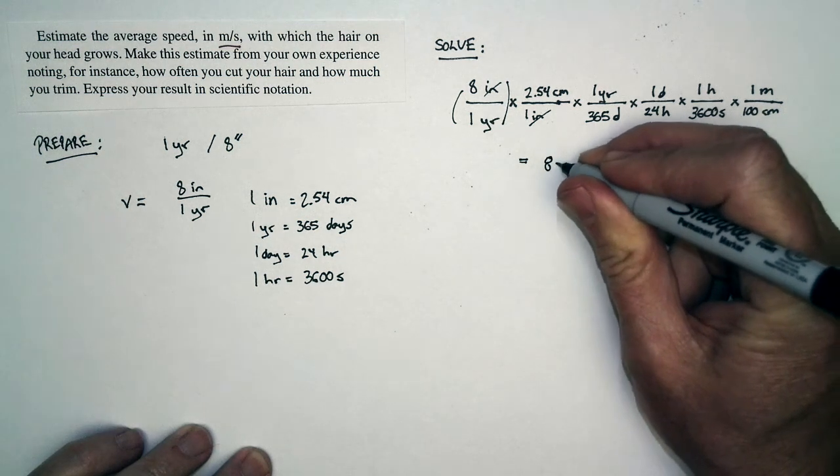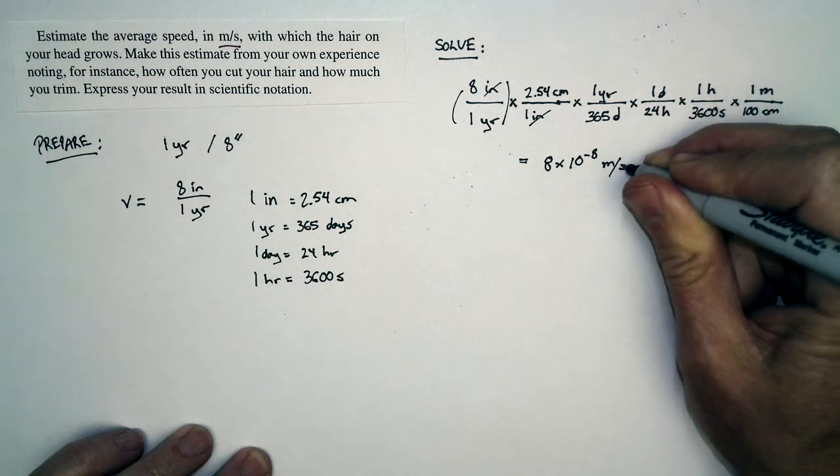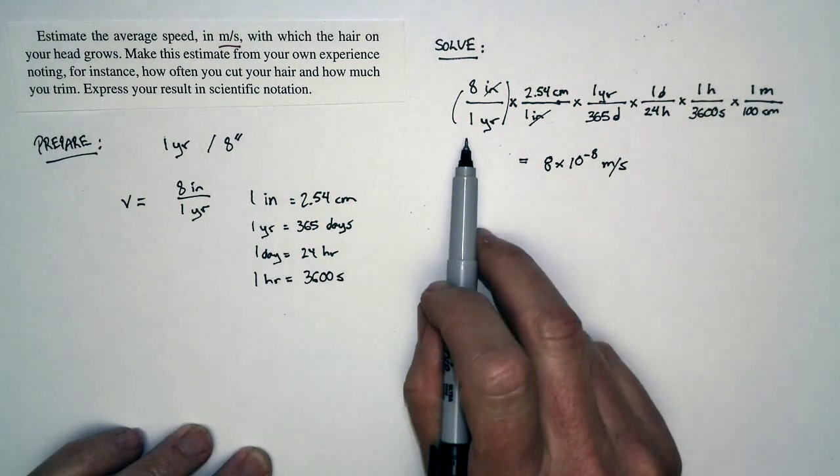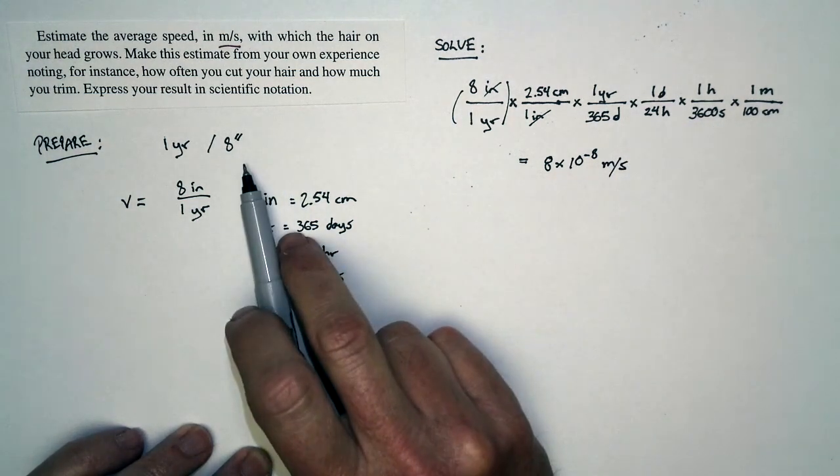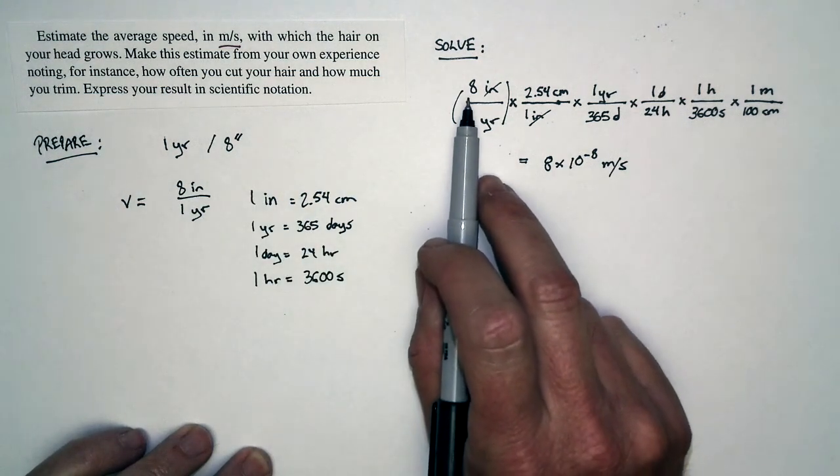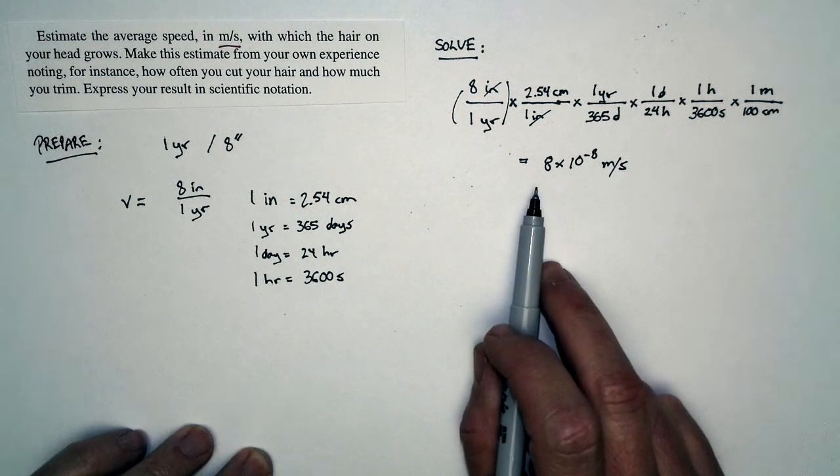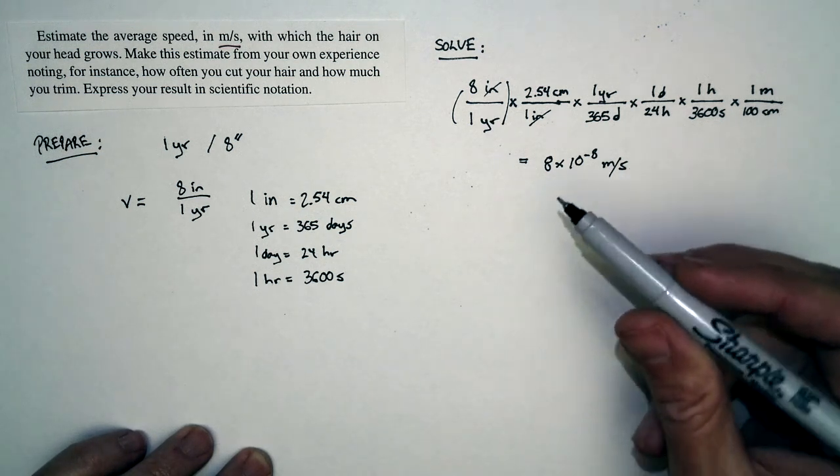Since this was a one significant figure estimate, the eight inches, it might be nine, it might be seven. This is a one significant figure estimate, so it's only correct to give our answer to one significant figure. That's another piece of the puzzle that we need to consider.